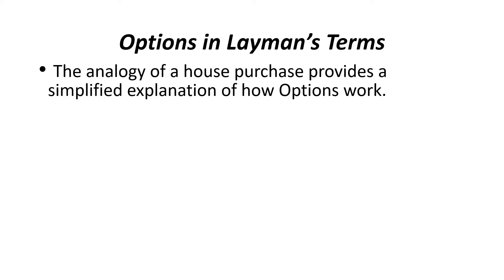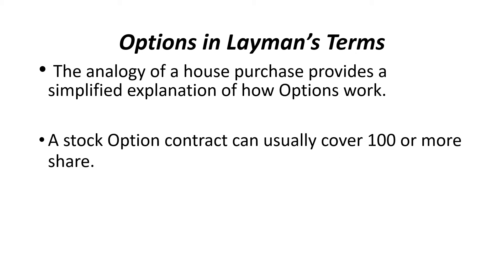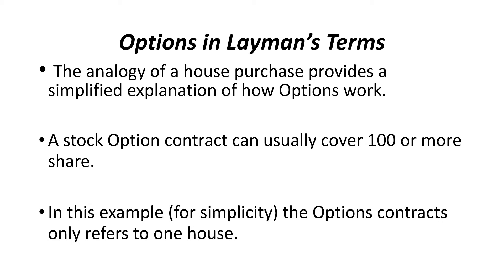I like to describe options in layman's terms, and I believe that the analogy of a house purchase provides a simplified explanation of how options work and how a put option works. A stock option contract can usually cover 100 or more shares, but to simplify this, in this example the options contract only refers to one house.